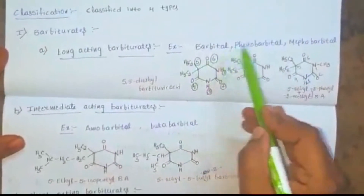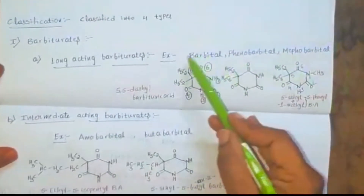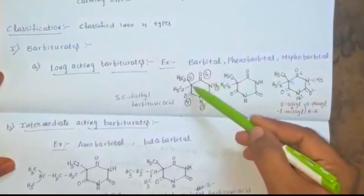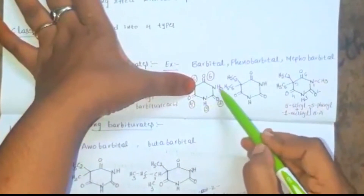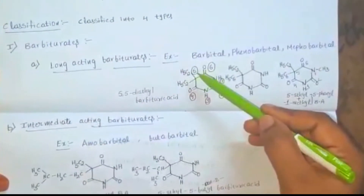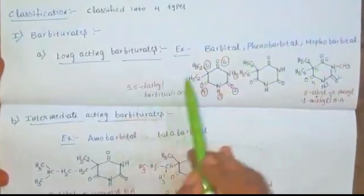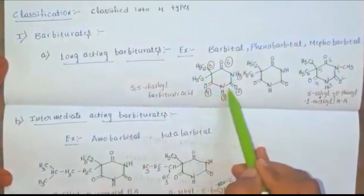Long-acting barbiturates — examples: barbitol, phenobarbital, mephobarbital. The structure of barbitol is numbered 1 through 6. Removal of two alkyl groups gives barbituric acid. Substitution of diethyl groups at the fifth position gives barbiturates. The nomenclature is 5,5-diethyl barbituric acid.